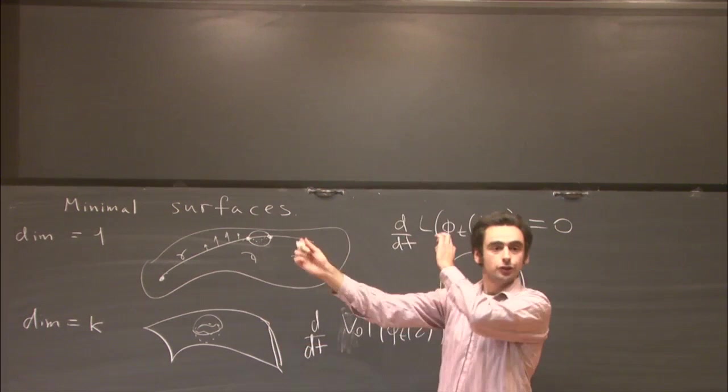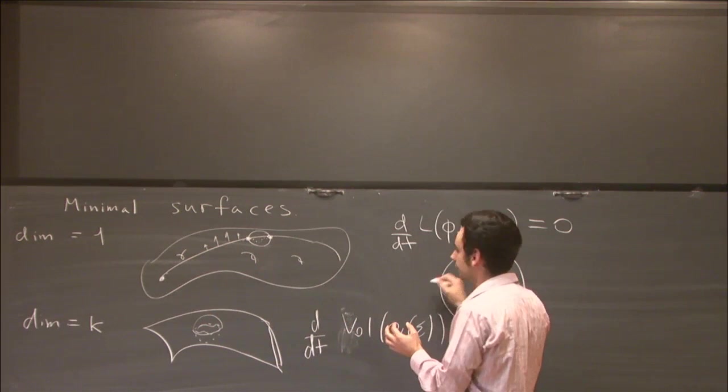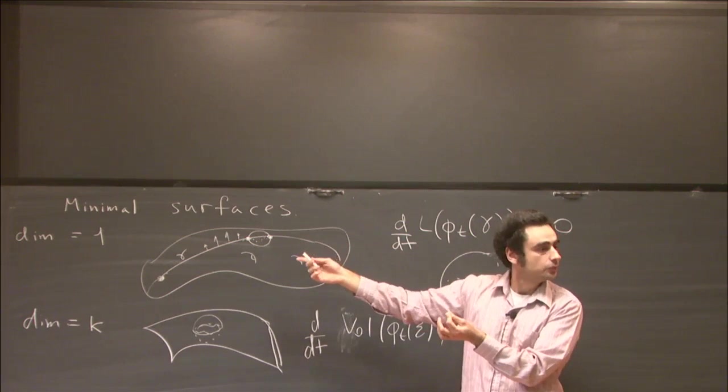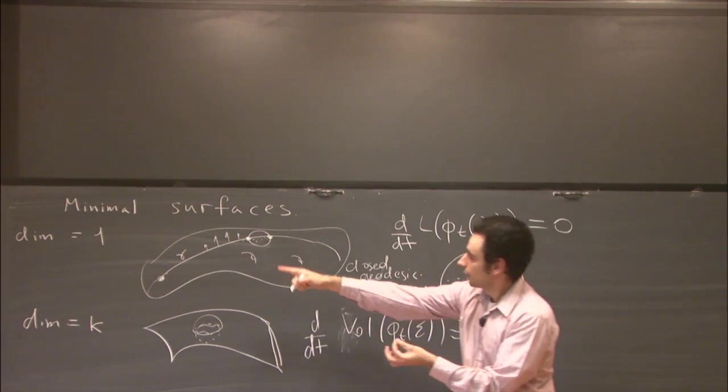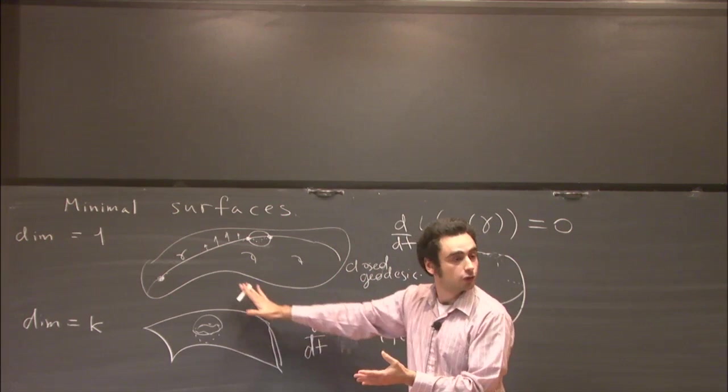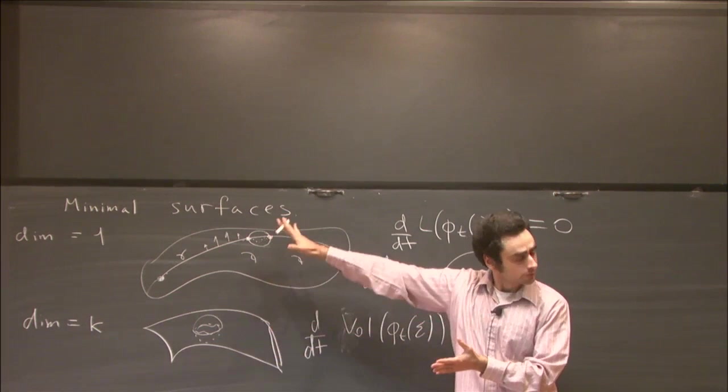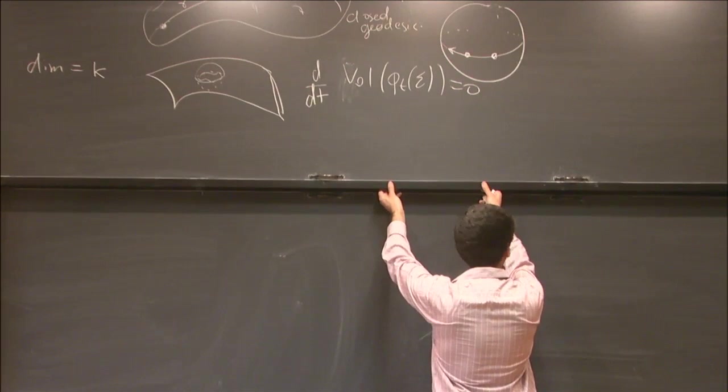When you shoot a bullet it may fly around your manifold and never come back, or it may eventually, like on the two-sphere, come back with the same tangent vector and its motion will become periodic. In this case we say that we obtained a closed geodesic. Similarly, we will think of maps of closed surfaces which are minimal surfaces, and we will be interested in constructing objects like that.